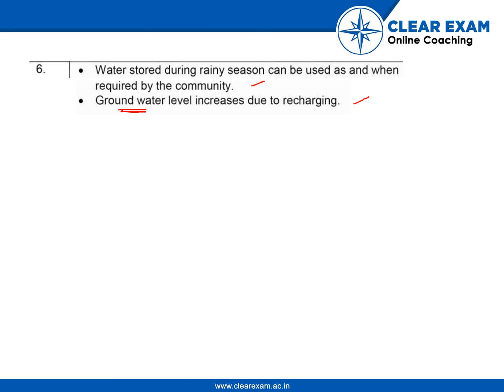If you do not remember, just apply your thinking at the time of writing the paper and you would automatically recall that water harvesting allows water to be used later by the community and it increases groundwater level. Write any two of these points and you would get full marks. Thank you, guys.